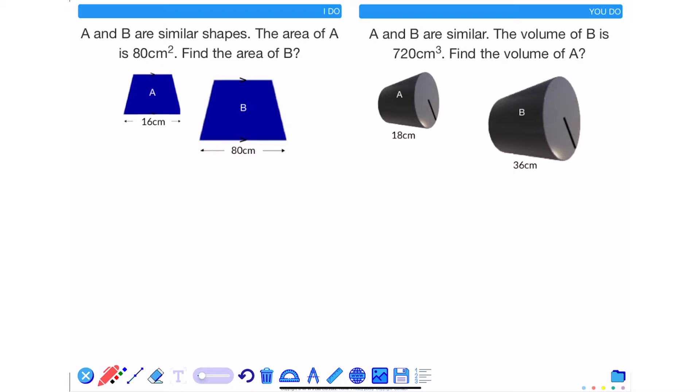In this video we're going to be looking at the scale factor of area and volume between two similar shapes. The first thing to know is that for lengths they will have a scale factor. To calculate the scale factor, divide a length by the same corresponding length in the similar shape.